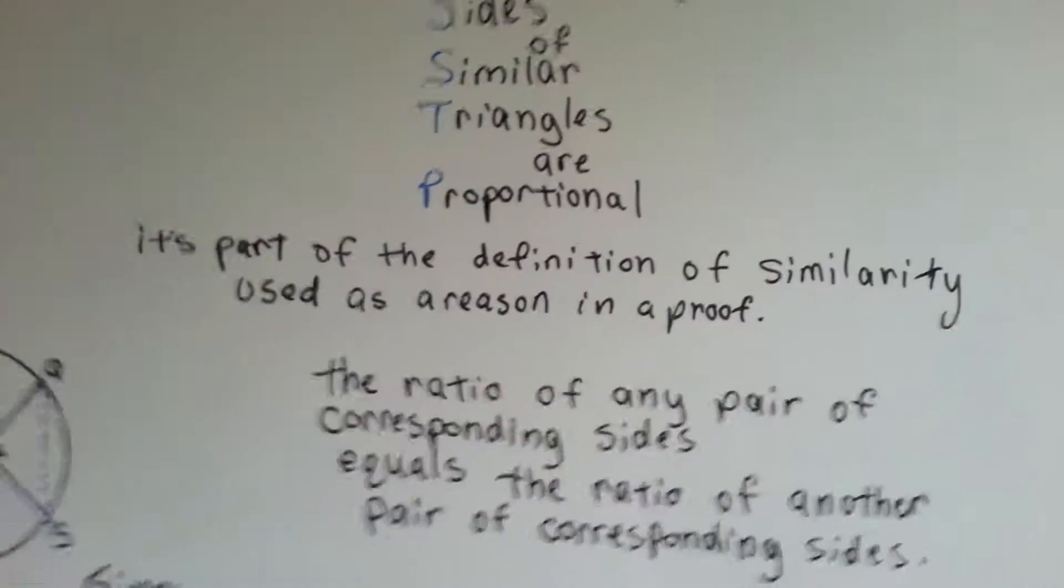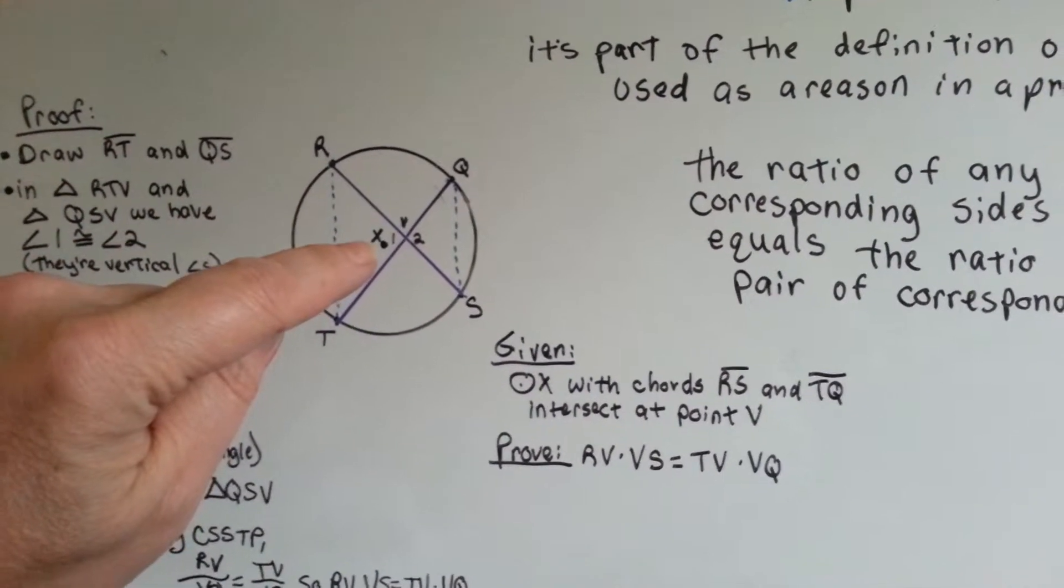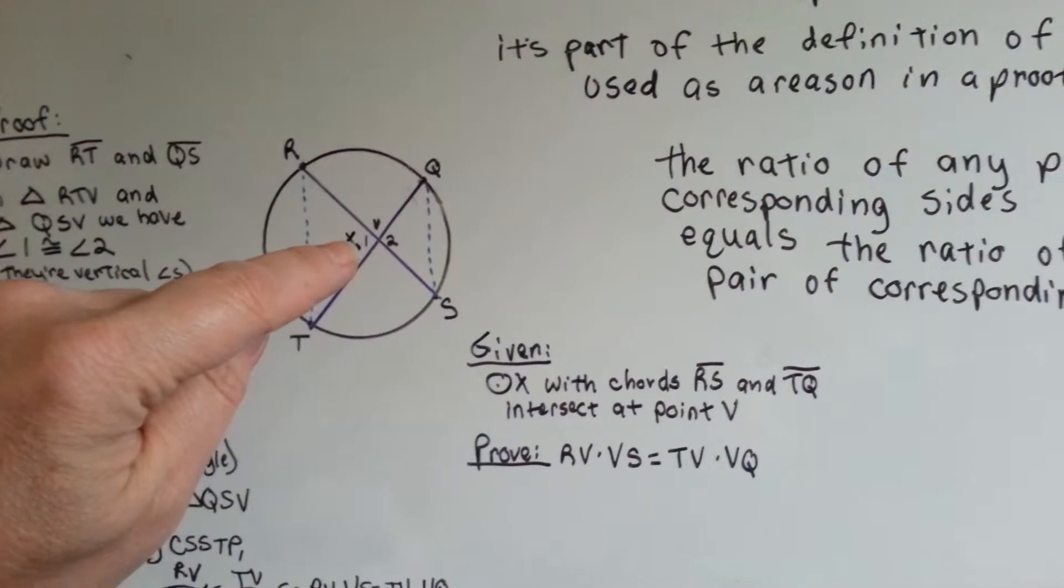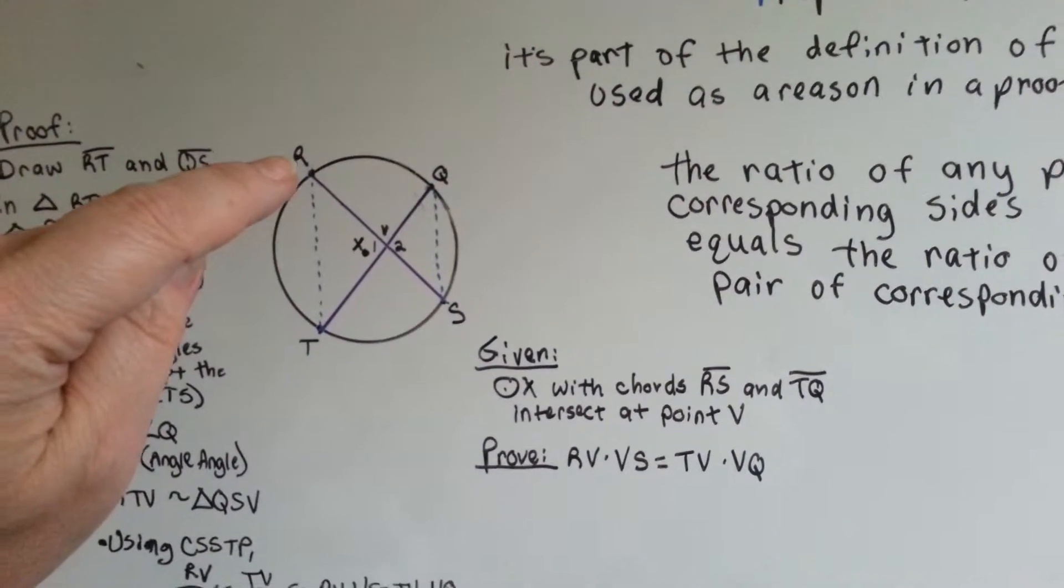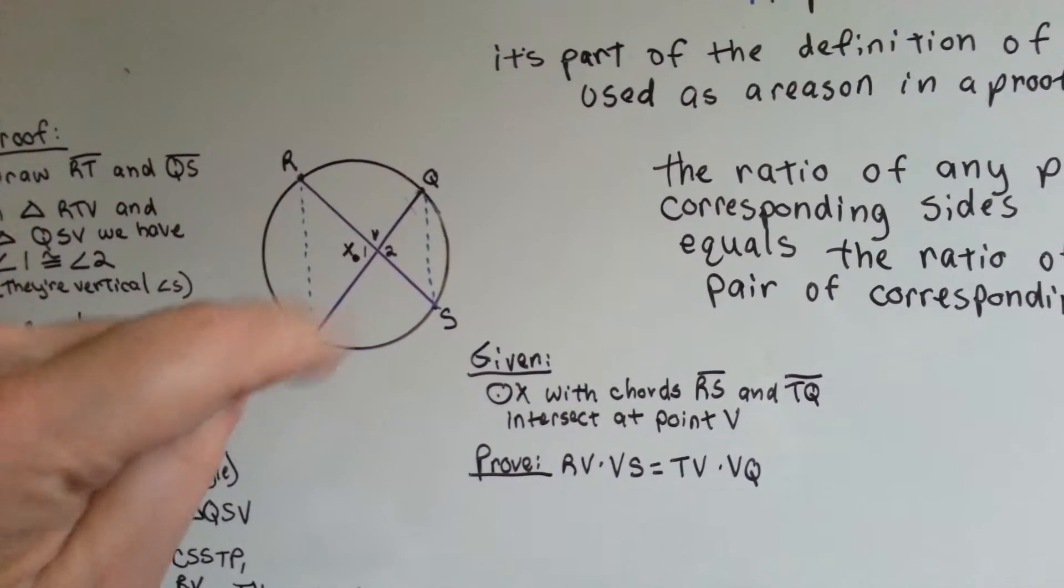Oh, what does that mean? Let me show you in a proof. So we have this drawing, and it is circle X, because see there's the center point X, and we've got a chord going this way and a chord going this way. We got RS and TQ.